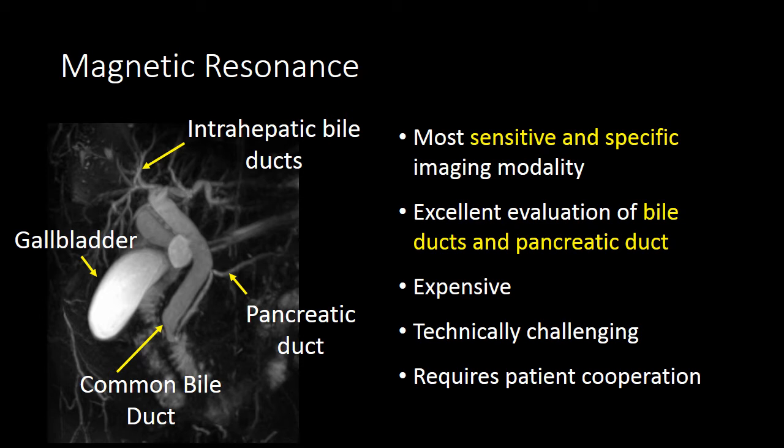Compared to other modalities, MRI is particularly good at detecting abnormalities of the bile duct or the pancreatic duct. But it performs just as well as the other modalities at detecting cholecystitis, gallstones, choledocholithiasis, and masses within the liver or pancreas.